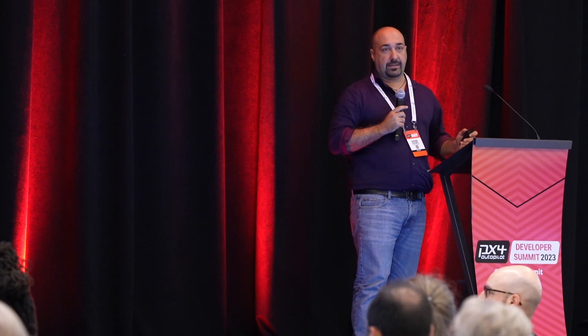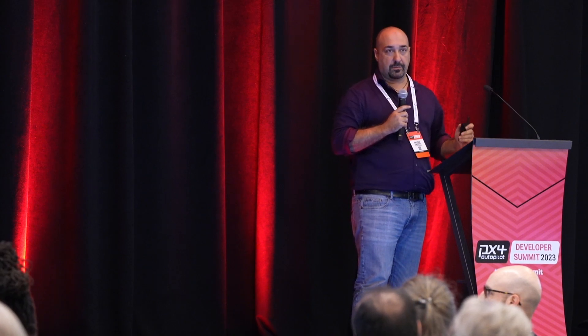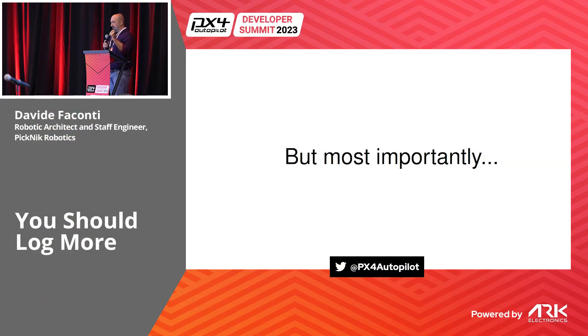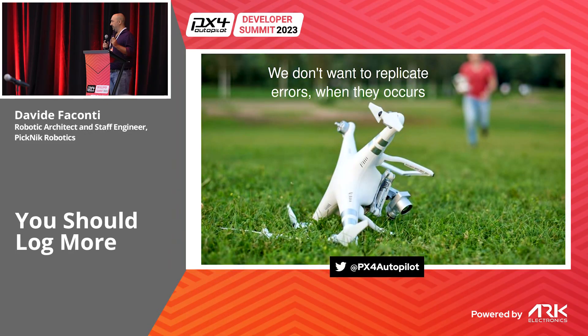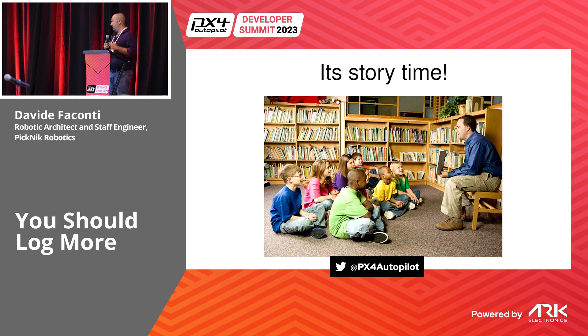Sometimes you need to work with embedded systems, which gives you even more constraints. Most importantly, we must not affect the real-time performance of any application that has a real-time control loop. But the one thing we really don't want is repeating a failed experiment. This is why the most effective way to debug our application is logging.